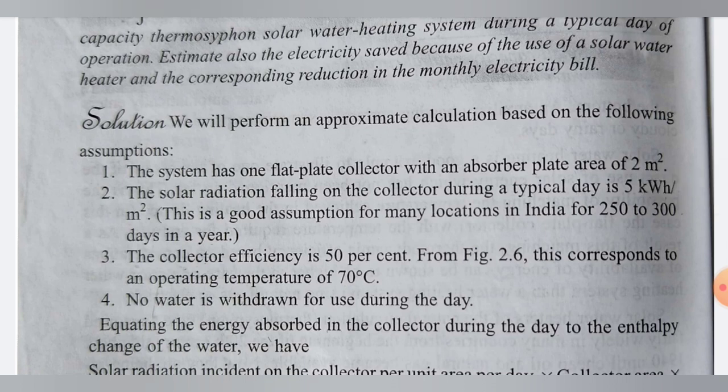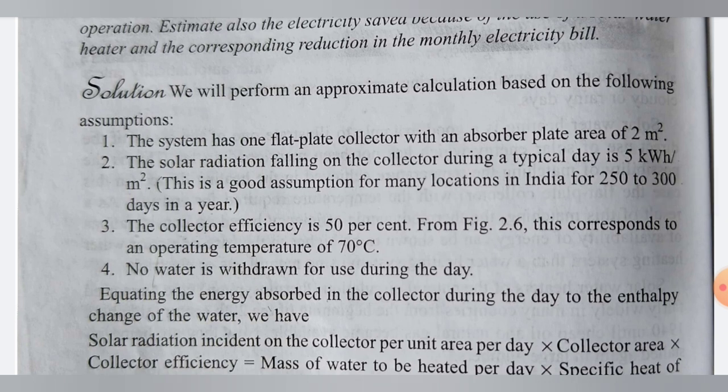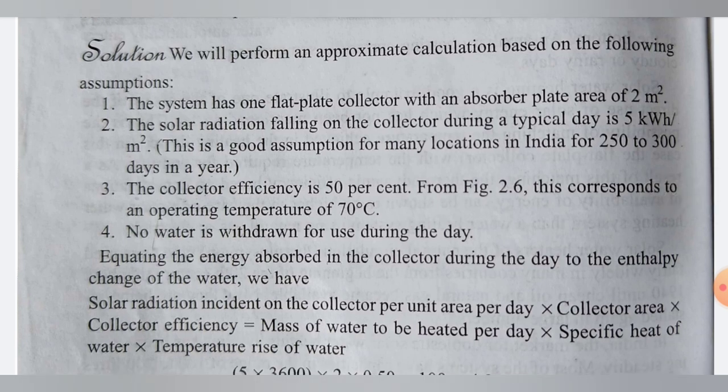We will perform an approximate calculation based on the following assumptions. First, the system has one flat plate collector with an absorber plate area of two square meters. Second, the solar radiation falling on the collector during a typical day is five kilowatt-hours per meter square. This average solar radiation assumption is good for many locations in India for 250 to 300 days in the year.